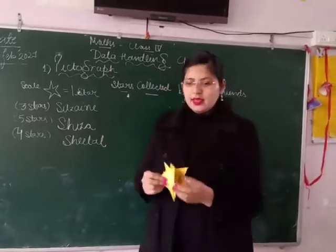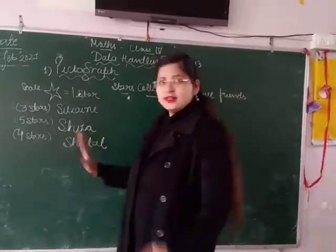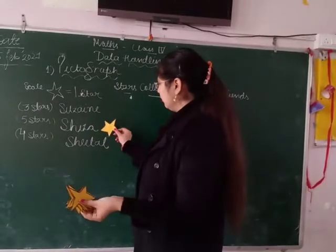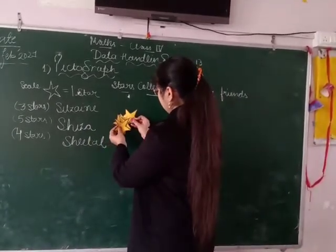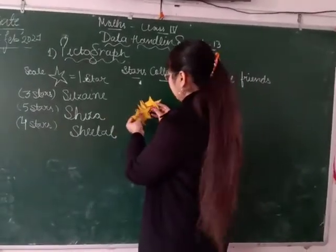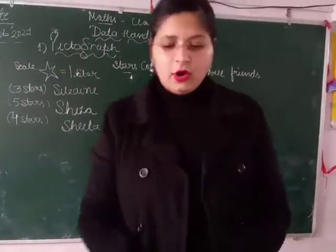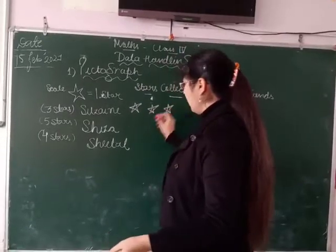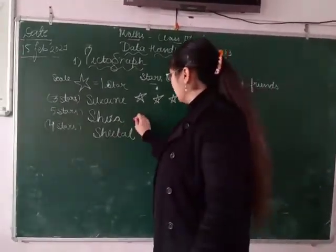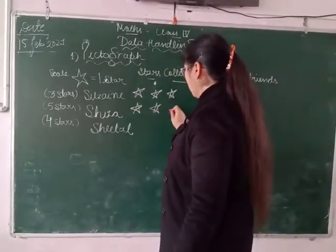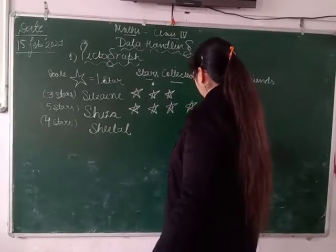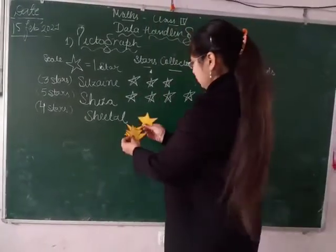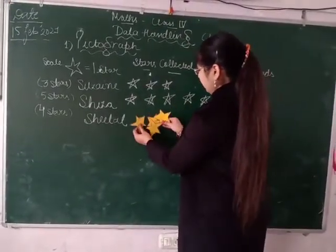Next, the next friend is Shiza — she has five stars, so we will paste or draw five stars here: one, two, three, four, and five stars. Then we have drawn one, two, and three stars for the pictogram. Next, Shikhar has four stars, so we will paste four stars: one, two, three, and four stars.